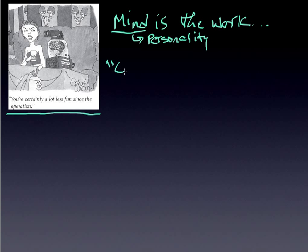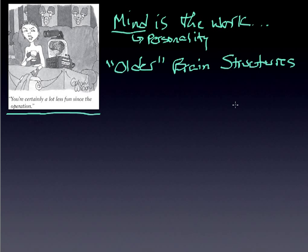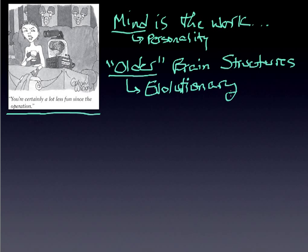What we're going to turn our attention to here is what your book refers to as older brain structures. One of the things I want to comment on — which is really the undergirding principle even in a class like ours — is for you to develop an ability to think critically about the information you're provided. One way to do that is to understand something as simple as the word 'older,' because it betrays an underlying evolutionary assumption.